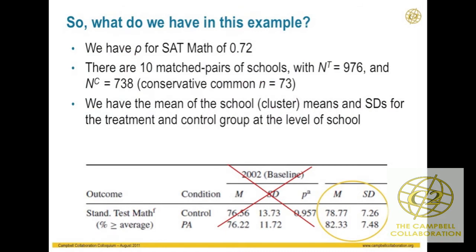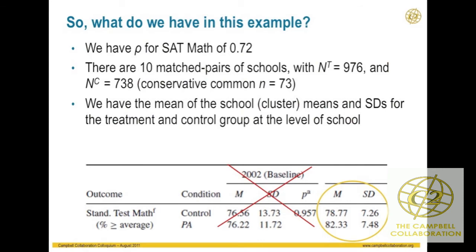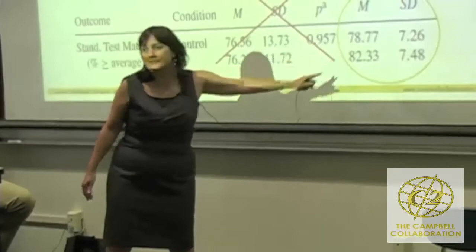So we have the post-test means and standard deviations for the control group and for the positive action intervention group on the standardized test. What I have so far: the ICC of 0.72, 10 matched pairs of schools, treatment group with 976 students, control group with 738 students. I'm going to take a conservative estimate — 738 divided by 10 — as my cluster sample size, since I'm not going to spend more time finding the exact number.